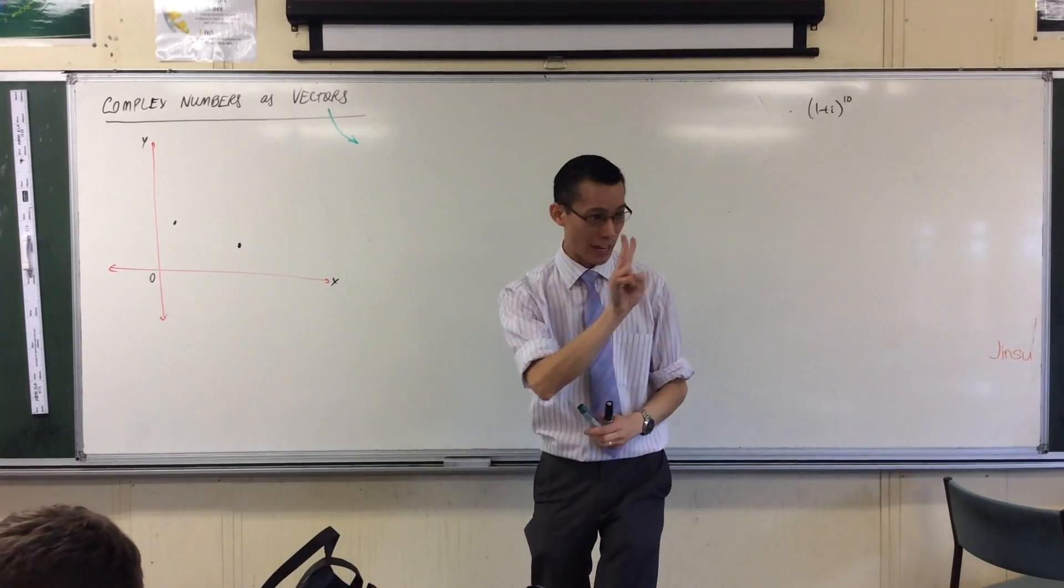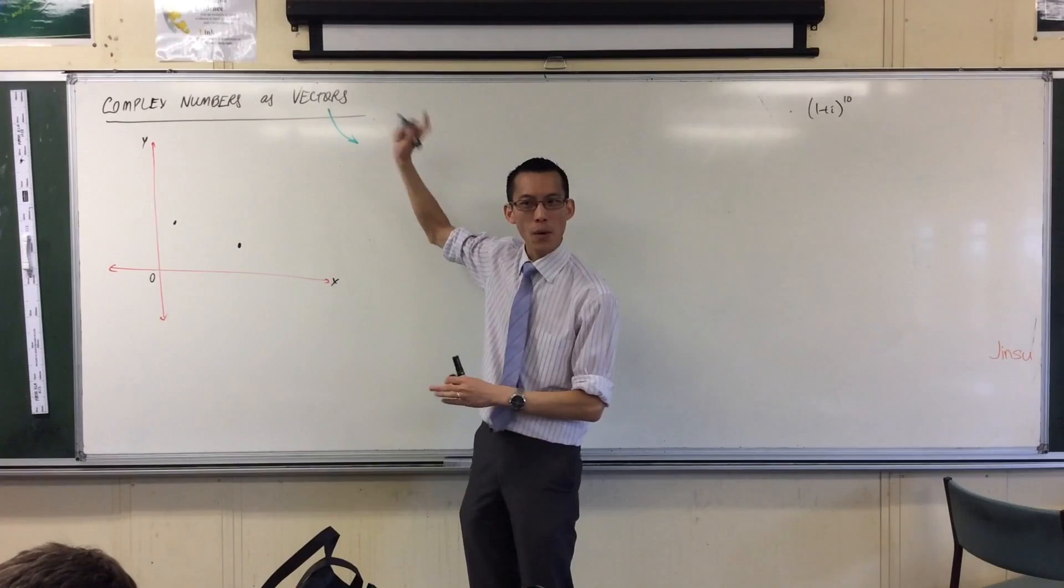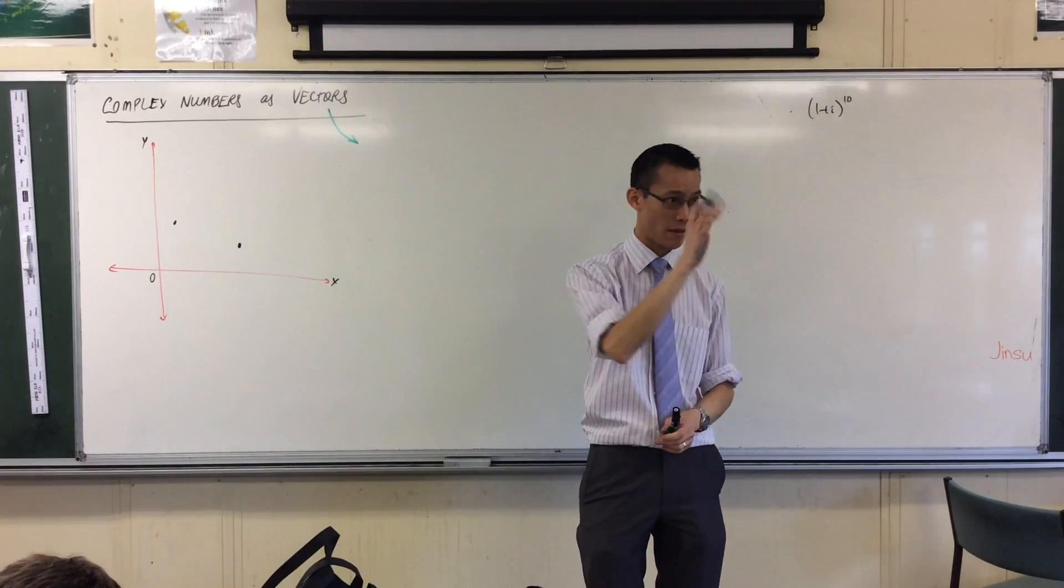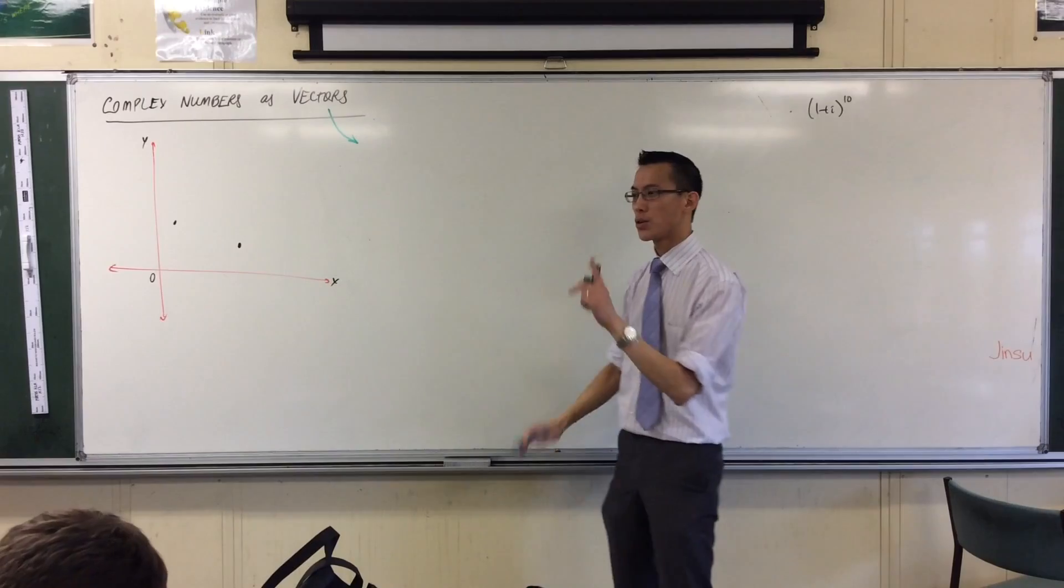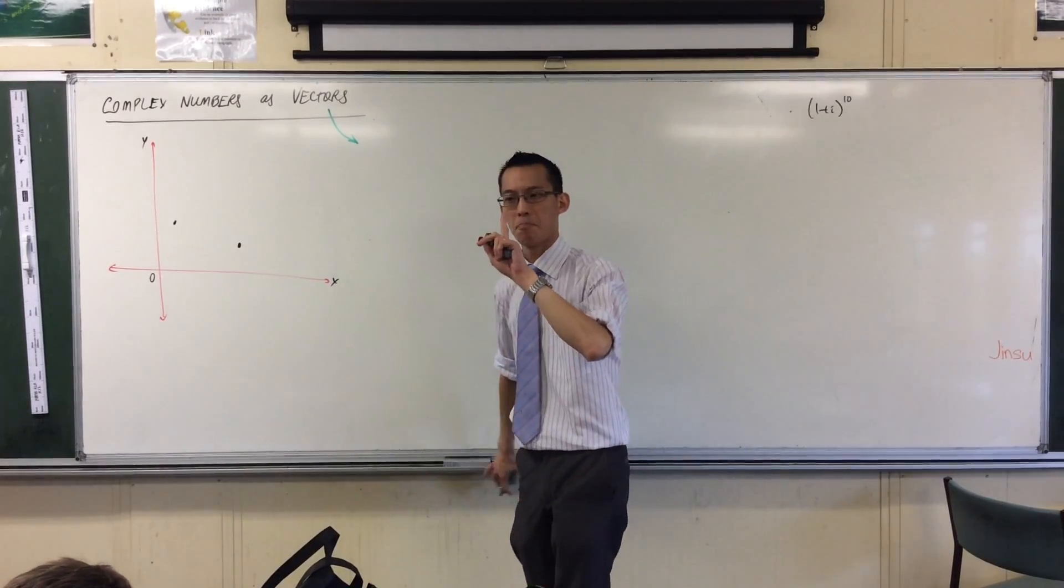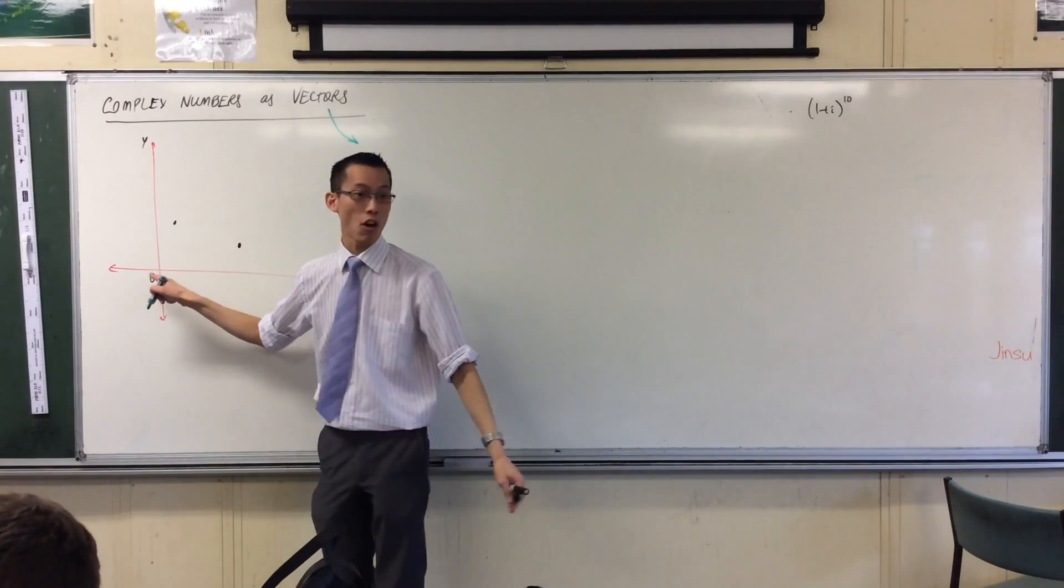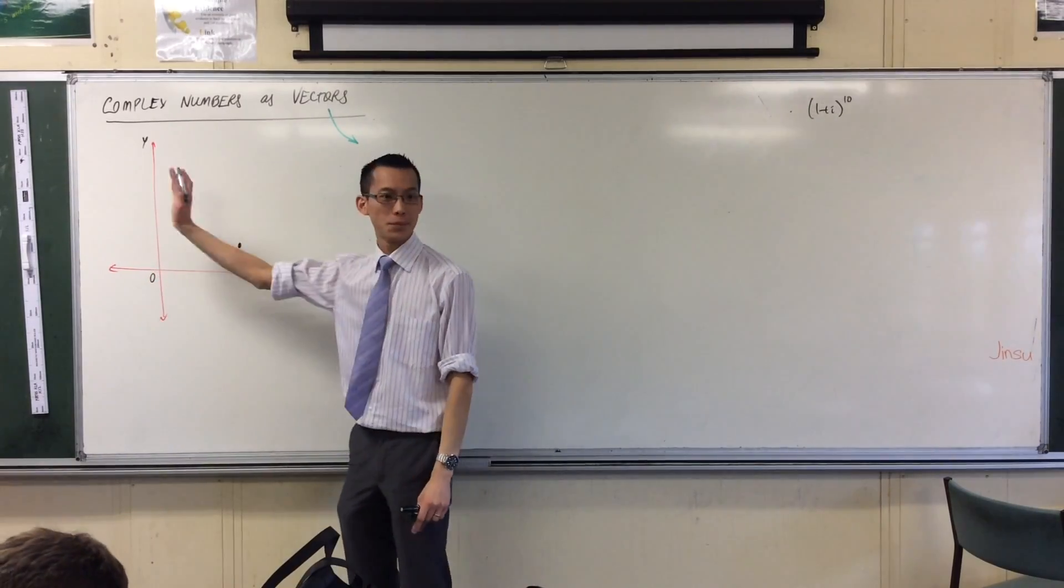Okay, so again, two key ideas. When we were having a look at x plus iy, it was just horizontal and vertical. When we talked about mod arg form, we were talking about modulus, size, distance from the origin, and an angle.